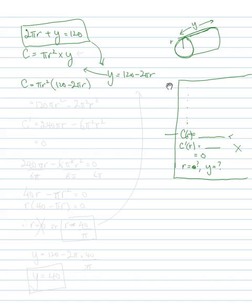Now I think this is easy enough to multiply. We could use a product rule here, but I think it's just easy enough to multiply these out because it's pretty easy. 120πr² - 2π²r³.